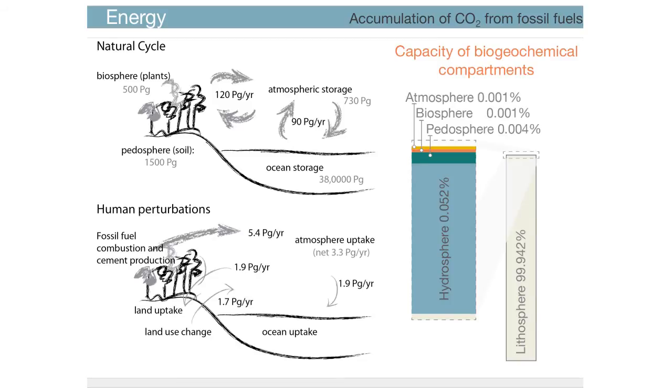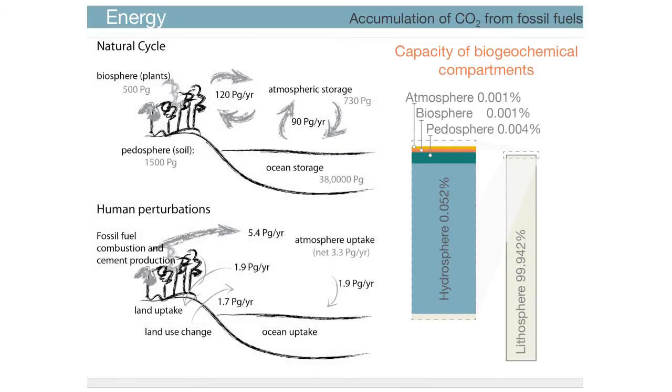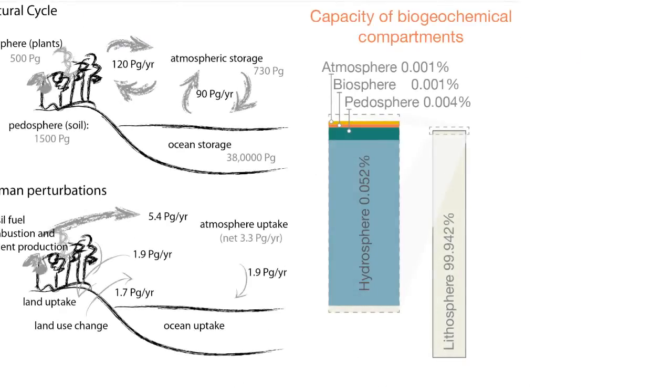This slide depicts the natural and the anthropogenic carbon cycles on the left, and on the right is a detailed picture of where the resulting excess CO2 from anthropogenic activity of burning fossil fuels is being stored. There are essentially five geochemical compartments that act as reservoirs for CO2.